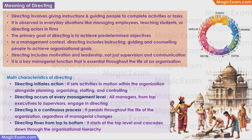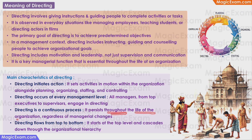What are the main characteristics of directing? Directing initiates action — you have the plans, the resources and the people, but there is no action until the managers start directing the staff. Just like in a movie shooting, acting starts when the director says lights, camera, action. Directing occurs in every management level, as all managers from top executives to supervisors engage in directing as part of their day-to-day activities. Directing is a continuous process that persists throughout the life of the organization regardless of managerial changes, stopping only when the organization becomes defunct.